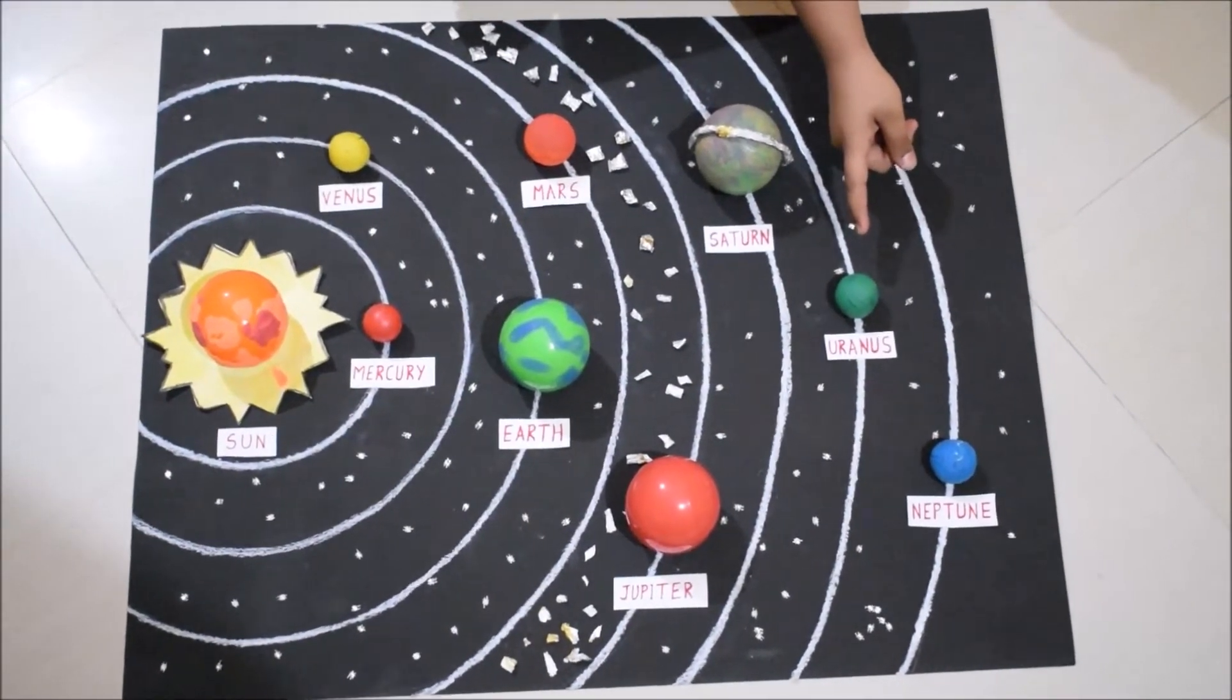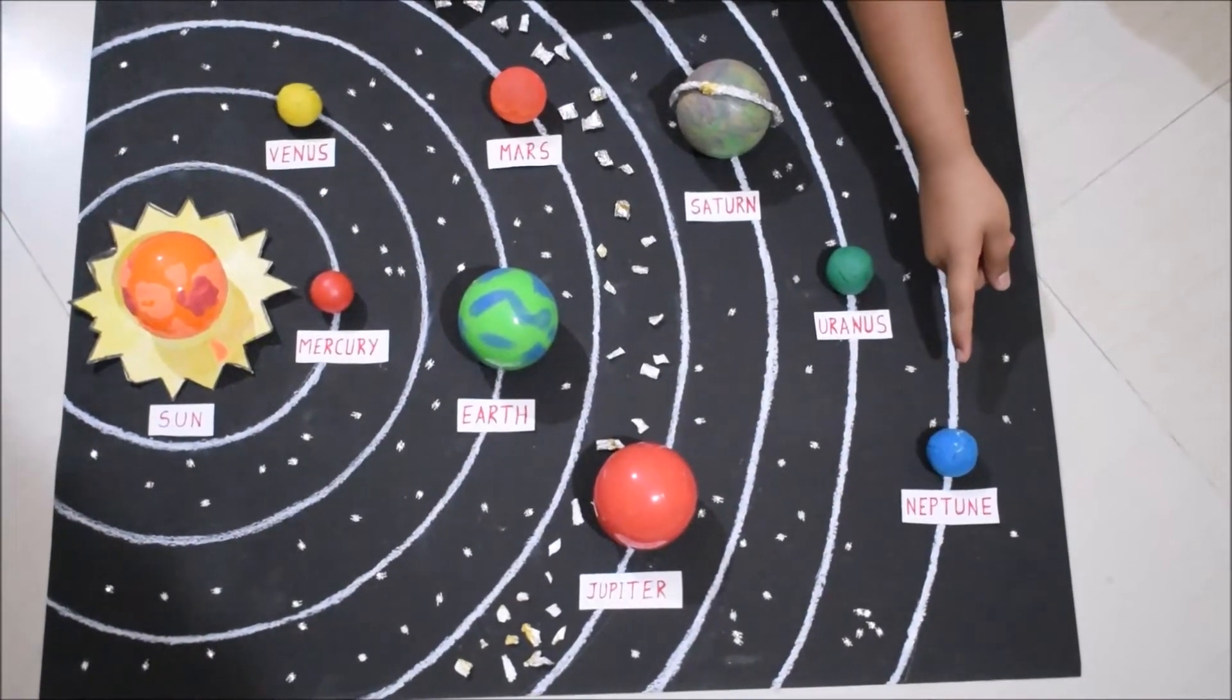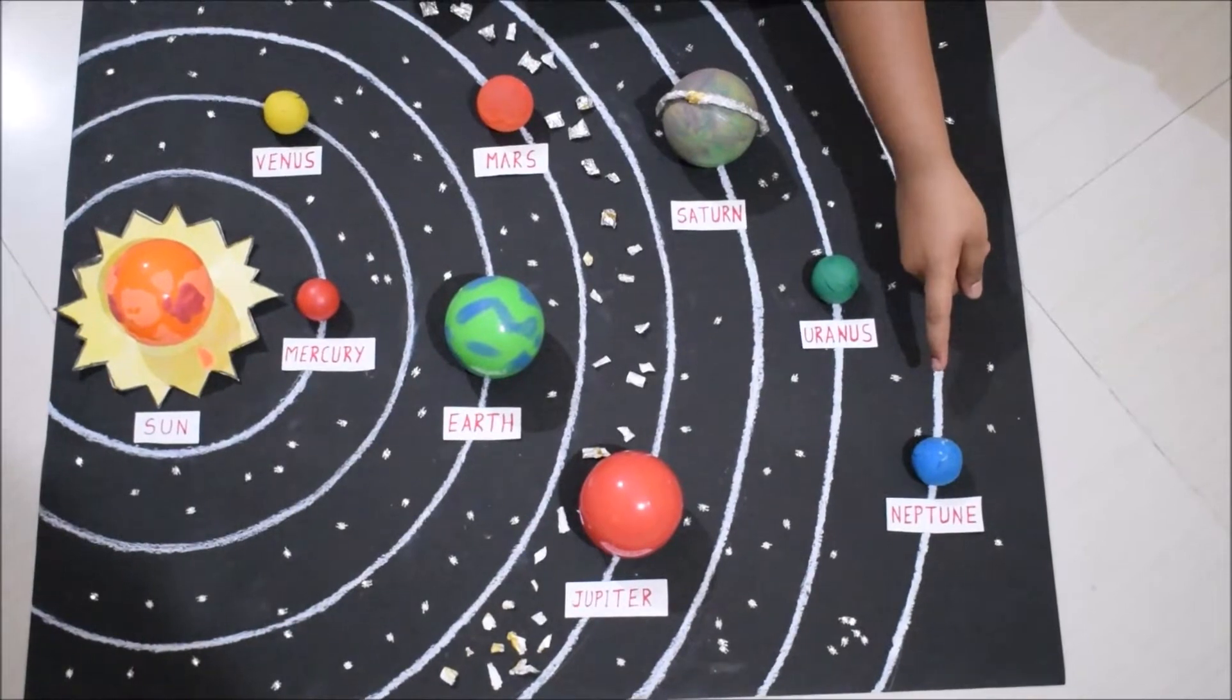Uranus is the third largest planet in our solar system. Next is Neptune, which is the fourth largest from the Sun.